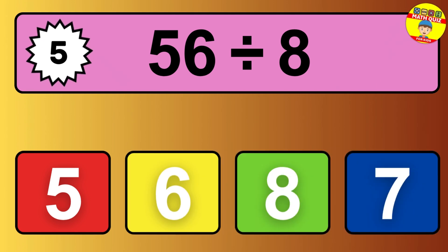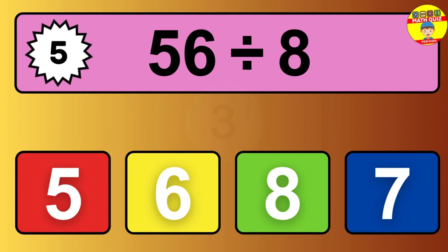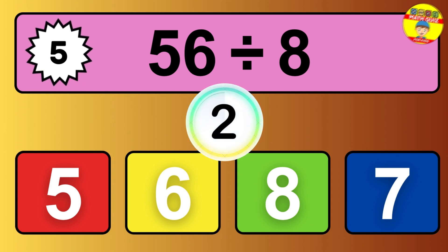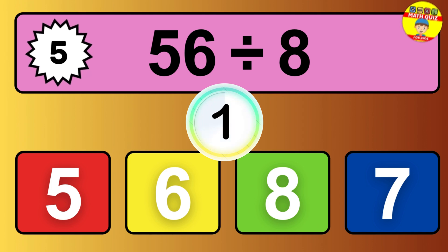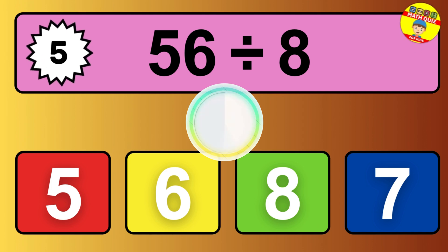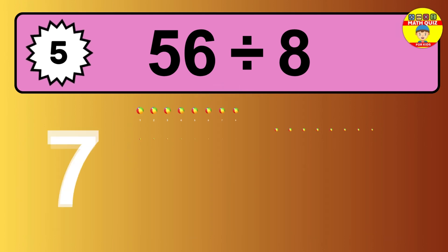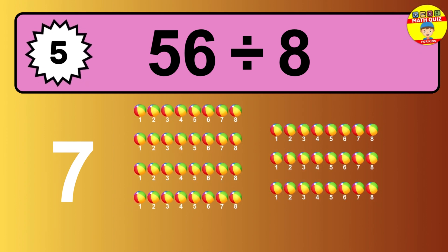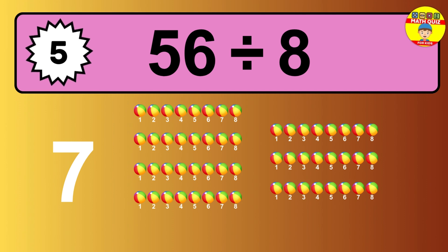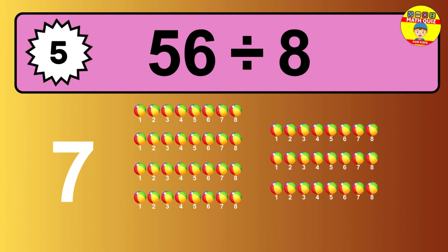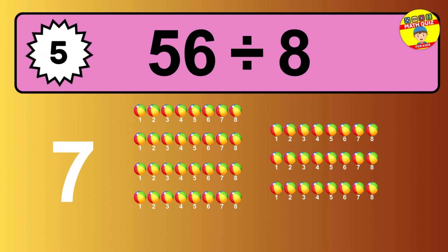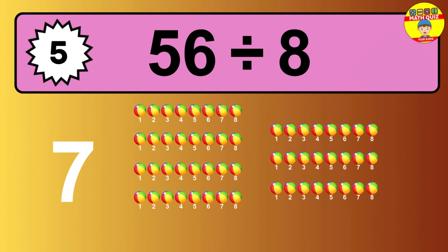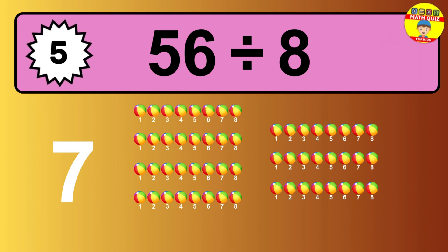56 divided by 8 — time to think. Let's go to the solution. Divide the number 56 by 8. Each group contains 8 units, so dividing 56 by 8 results in 7 equal groups. Thus, the result is 56 divided by 8 equals 7.